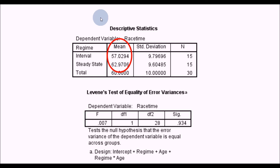First, we'll check Levene's test to see if we have equal variances. This is not significant, so we can assume equal variances.